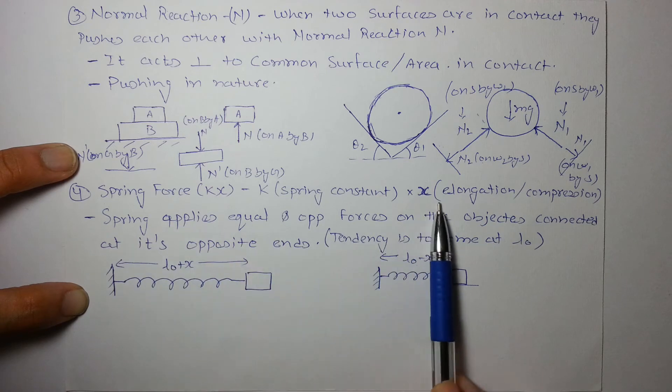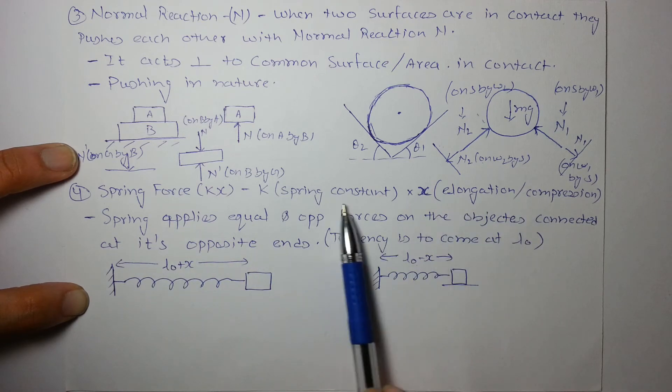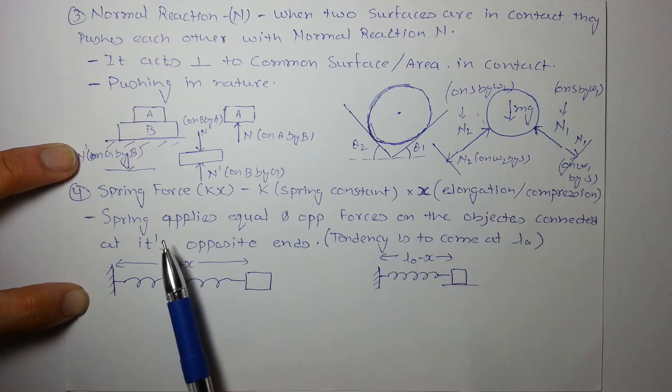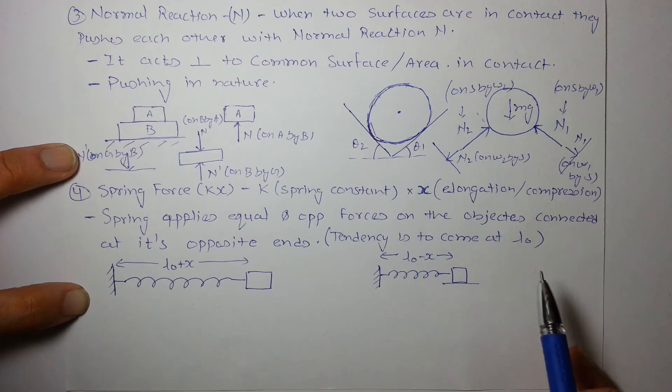So we can say whenever spring is elongated or compressed, it applies a force which is equal to K times its elongation or compression. And the natural tendency of the spring is to come at its natural length, which is L0 in this case.